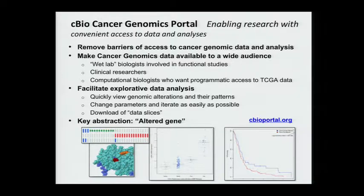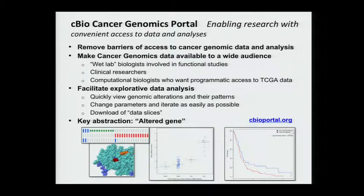With this portal, one can very quickly visualize and analyze genomic alterations in an iterative and interactive way. We hope this portal can really help cancer researchers translate complex genomics data into biological insights and clinical applications. One key abstraction is the concept of an altered gene — a gene is considered altered if it is mutated, amplified, or deleted. This simplifying concept is very powerful and enables users to derive hypotheses regarding frequently altered gene sets or pathways.